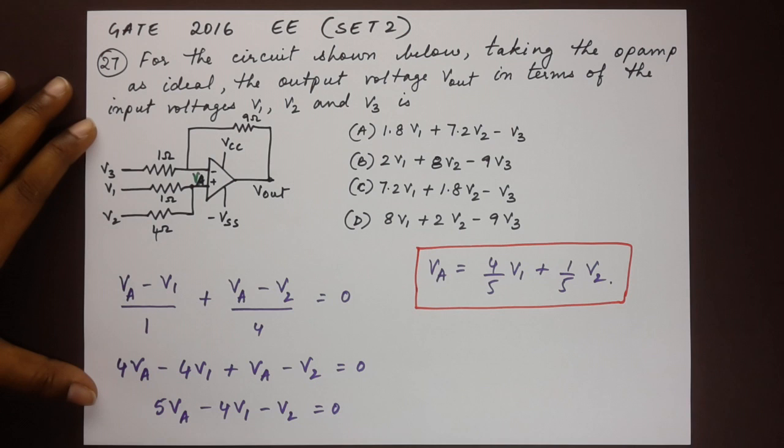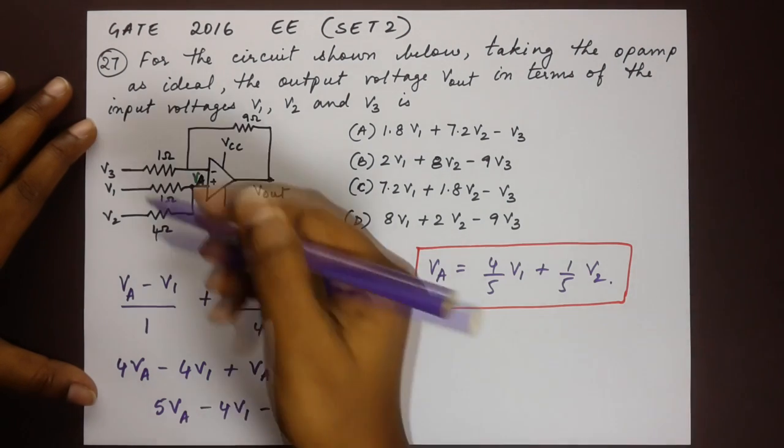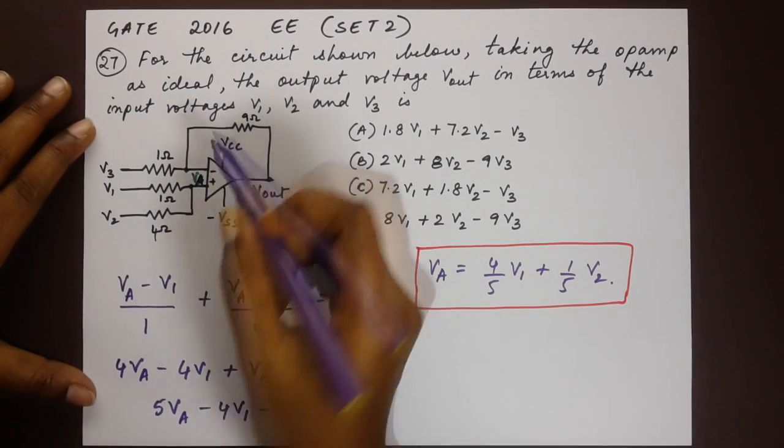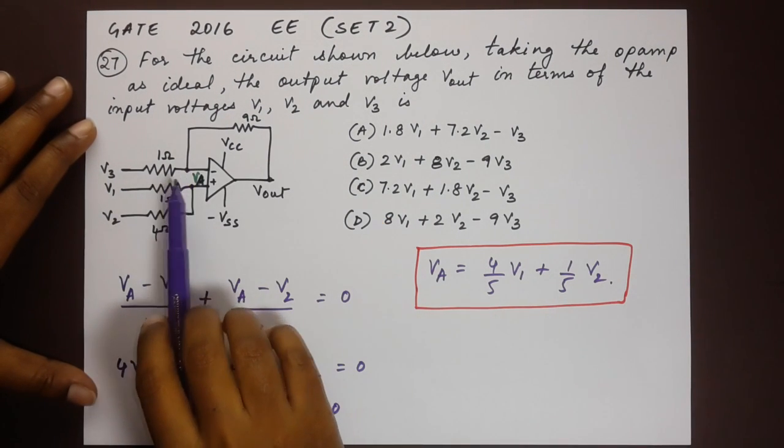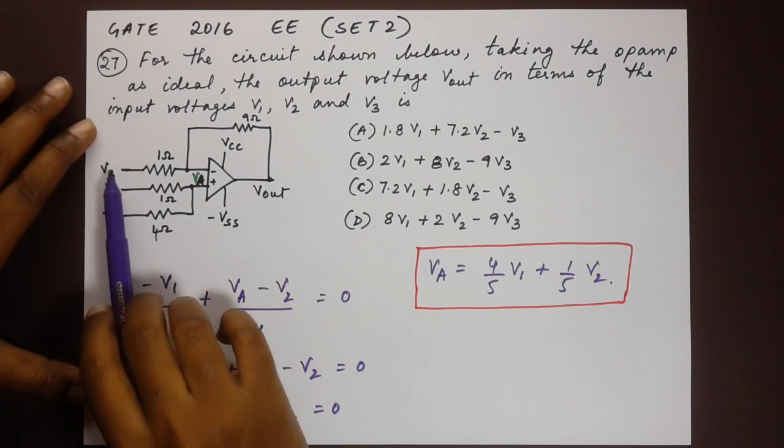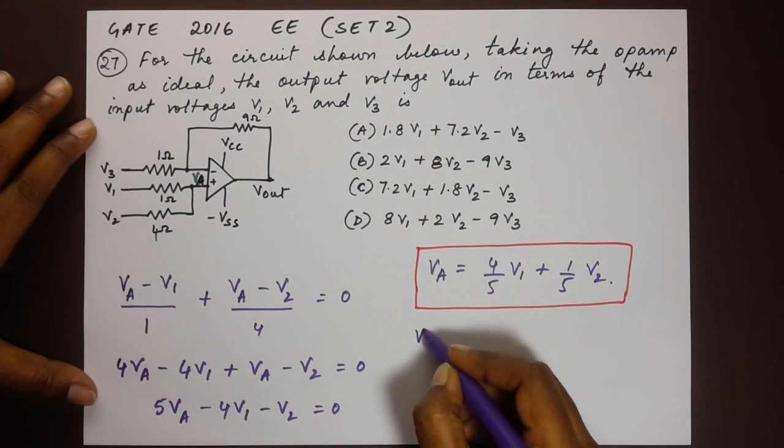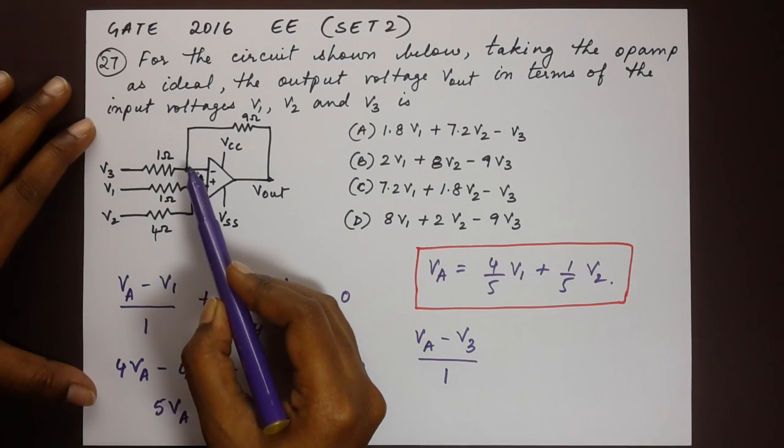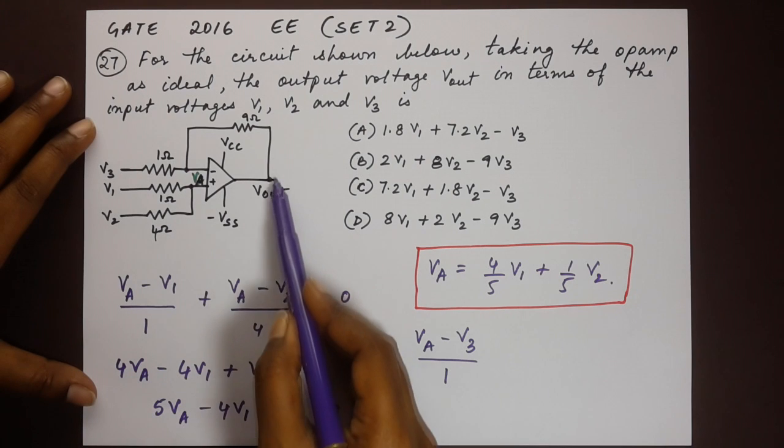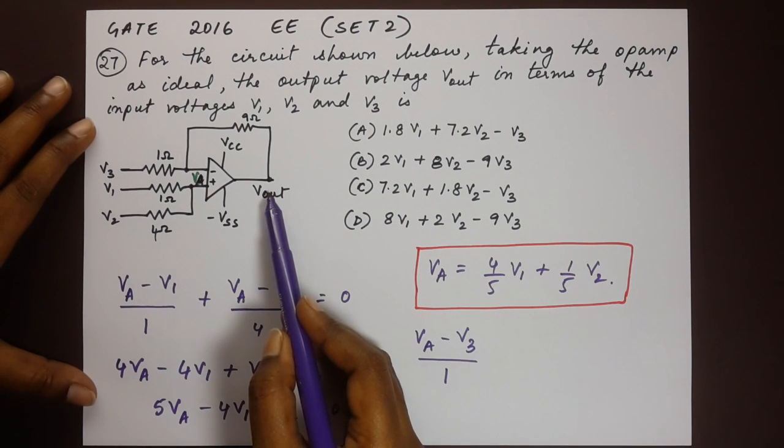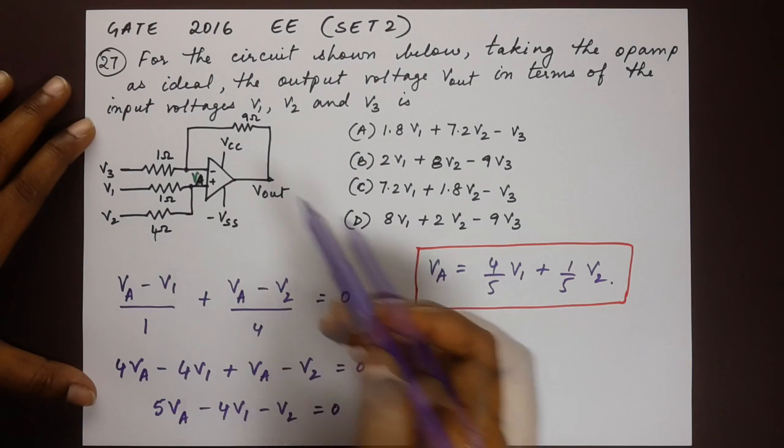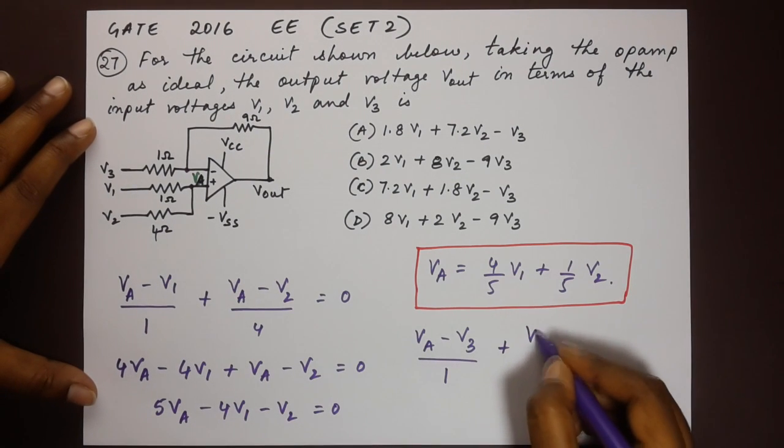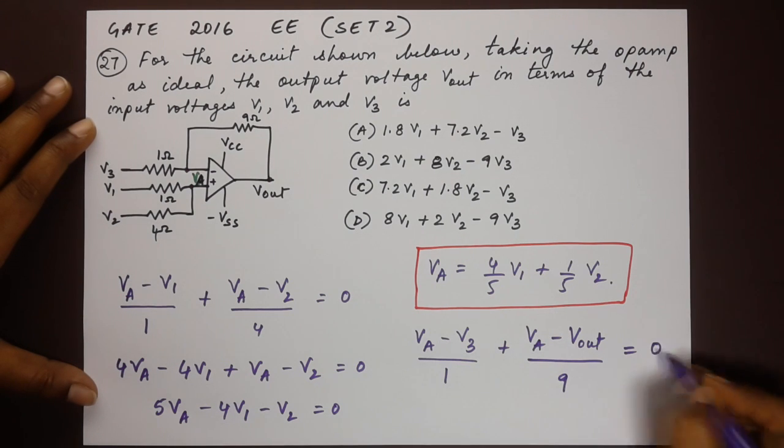The next thing is to write down the second current equation. Let's take the same point but this time we will take the point here. That is Va now. The second equation would be Va minus V3 by 1. The next thing would be Va minus Vout by the resistance in between which is 9. So it's Va minus Vout by 9 is equal to 0.